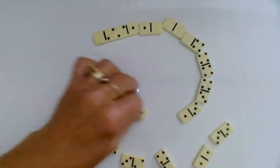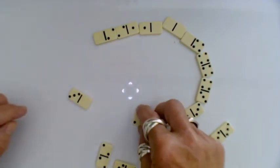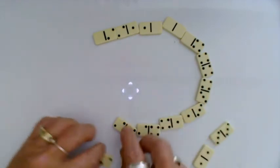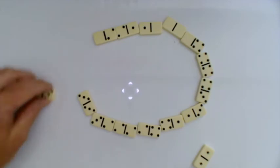I need a one. Four there, four two. Two two, I can use that one there. Two three. Three three. Three blank.